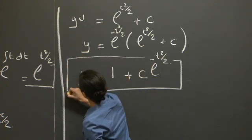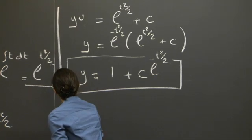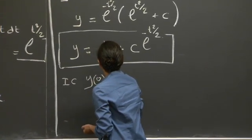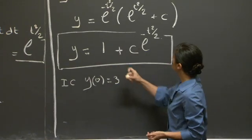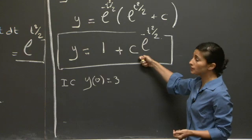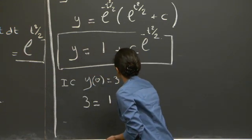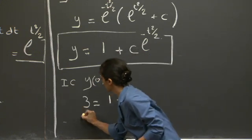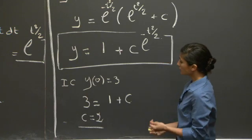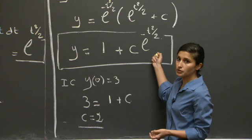Remember that we're solving an initial value problem subject to y(0) = 3. Substituting t = 0, e^0 = 1, so we get 3 = 1 + c. Therefore, c = 2.